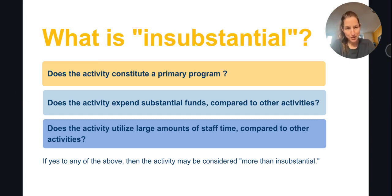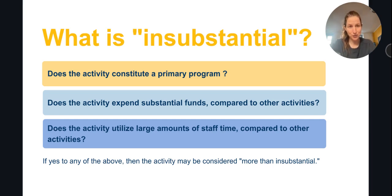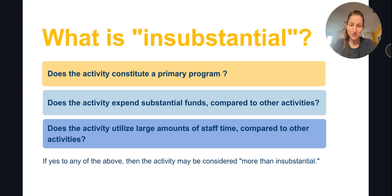It's also important to understand how we can try to determine whether a charity's lobbying activity is, in fact, more than insubstantial. There is no bright-line rule, specific amount of funds, or percentage that we use to make this determination. You must look at the activity compared to the organization's overall expenditures, time, and resources. Here are a few questions you can ask yourself to help determine whether your organization's lobbying activity might be considered more than insubstantial.